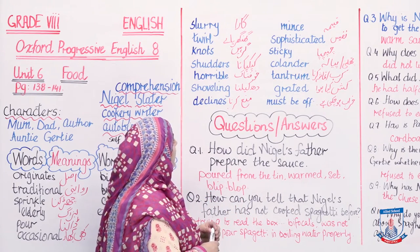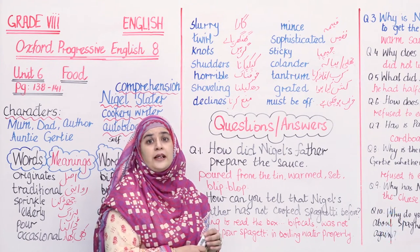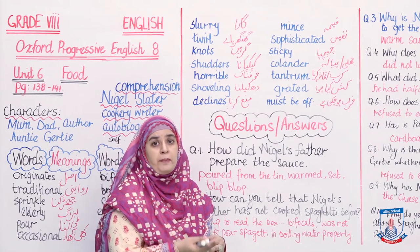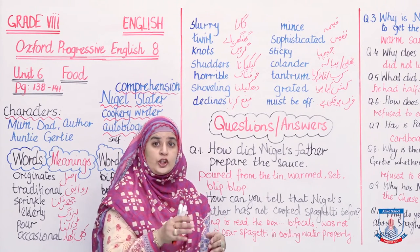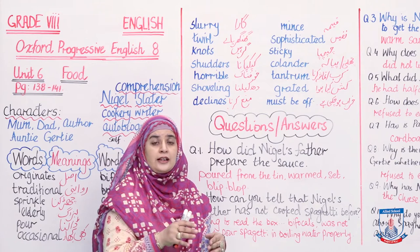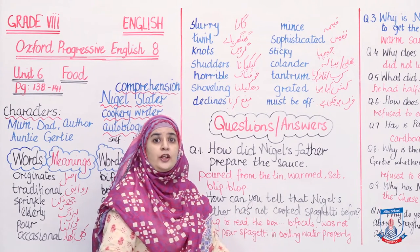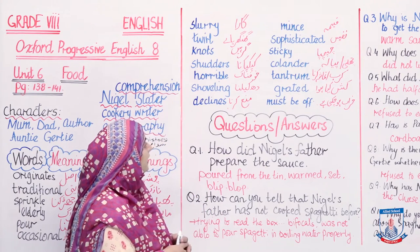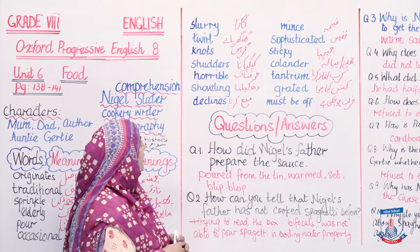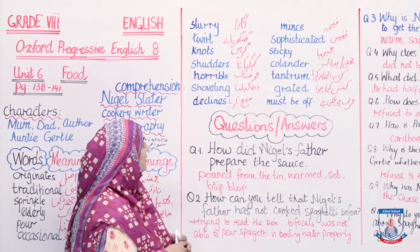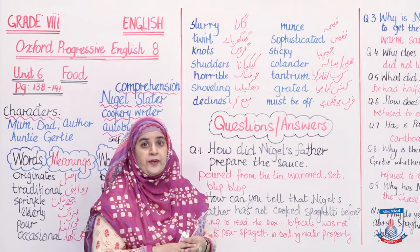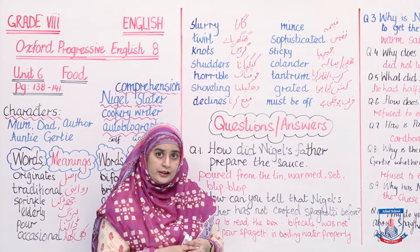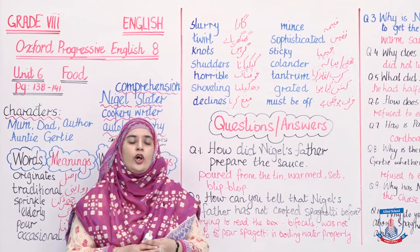Horrible - khaufnaak. Tantrum - aap us waqt tak koi tantrum throw nahi karte jab tak aap ki mushkil mein na pade hoon. Ya wo jo bachche, chhotay bachche tantrum throw karte hain - aksar aapne dekha hoga, wonderland ke baher zameen pe lete hote hain ki humne wonderland zaroor jana hai. So, wo tamasha karna. Shovelling - dhakhelna. Grated - kash ki awaz. Declines - mana karna. Must be off is a phrase jis ke maini hain ke most probably wo kharaab ho gaya hai. Yeh thi vocabulary aur uski translation.